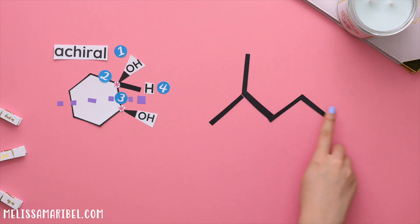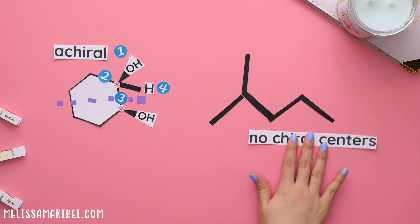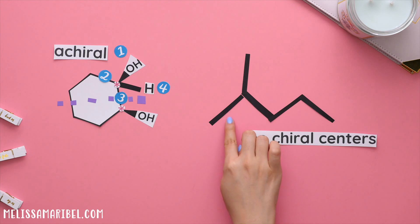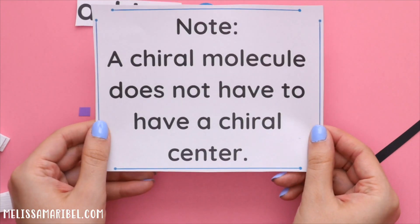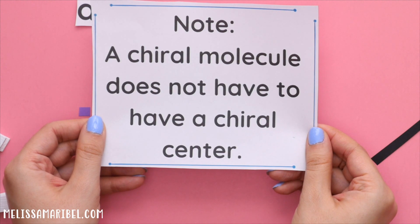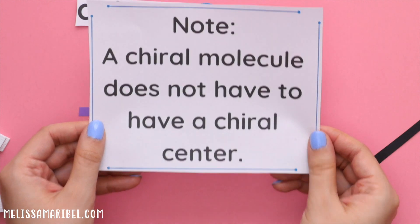In this example, there are actually no chiral centers because there are two methyl groups. Remember, all of the groups have to be different. Note, a chiral molecule does not have to have a chiral center. There is no line of symmetry within this molecule, making it chiral.